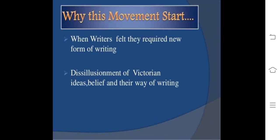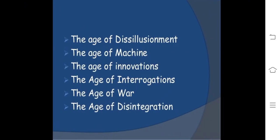Why did this movement actually start? The main reason is that writers felt they required a new form of writing. There was a disillusionment of Victorian ideas, beliefs, and their way of writing. This age is also called the age of disillusionment, the age of machine, the age of innovations, the age of interrogations, the age of war, and the age of disintegration.